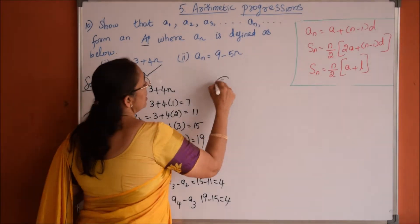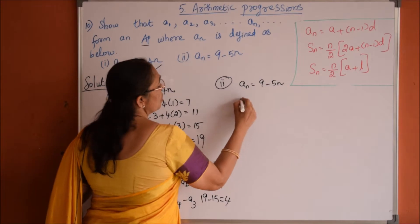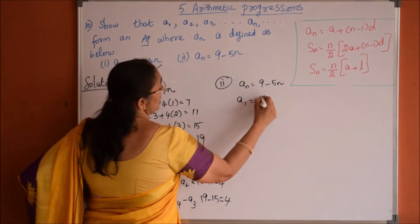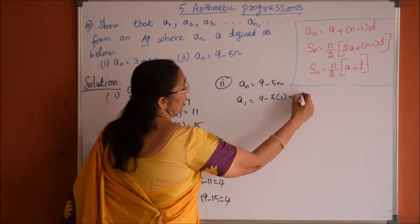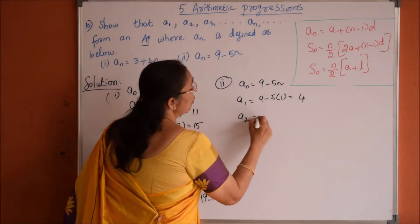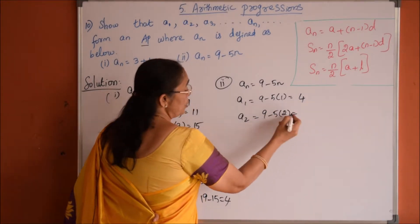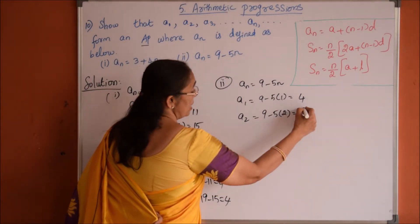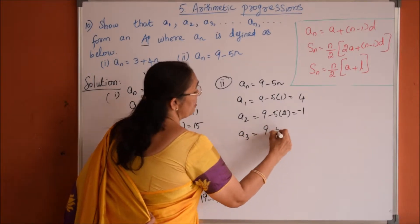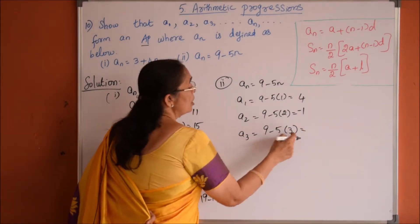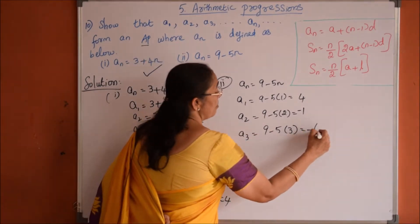Coming to second problem, here a_n is given as 9 minus 5n. So what is our a1 will be 9 minus 5 into 1, so which is 9 minus 5, 4. a2 is 9 minus 5 into 2, so 5 twos are 10, minus 10 plus 9, minus 1. a3 is equals to 9 minus 5 into 3, 5 threes are minus 15, minus 15 plus 9, minus 6.